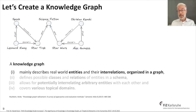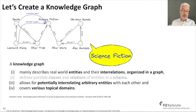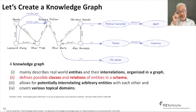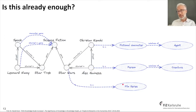Let's check our knowledge graph example against these criteria. It describes real-world entities and interrelations organized in a graph — check. It allows for inter-relating arbitrary entities with new edges and meanings — check. It covers various topical domains, here science fiction — check. And it defines classes and relations in a schema. For example, Obi-Wan Kenobi is a fictional character, a kind of agent; Alec Guinness is a person, a kind of creature; Star Wars is a film series. But is this already enough to be a proper knowledge graph?